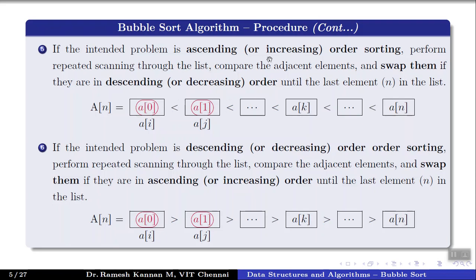We interchange elements to make the ascending order condition valid. For descending order bubble sort, the condition is reversed: if a[i] is greater than a[j] it is fine, but if it is vice versa we swap. As we proceed, at each step a[i] and a[j] advance through the array until we reach a[n]. In every pass, the number of comparisons in the first pass is n−1, in the second pass it is n−2, in pass 3 it is n−3.